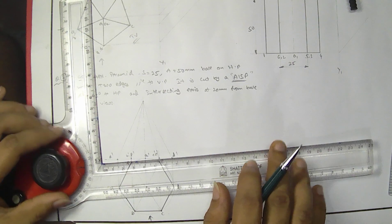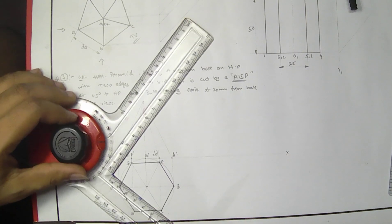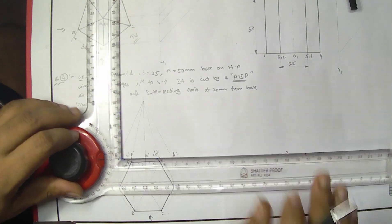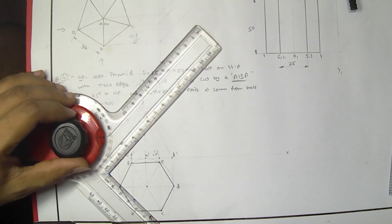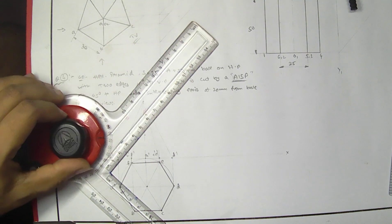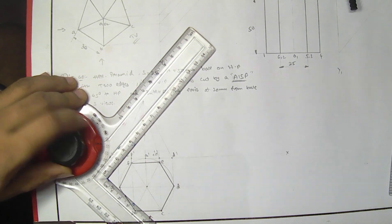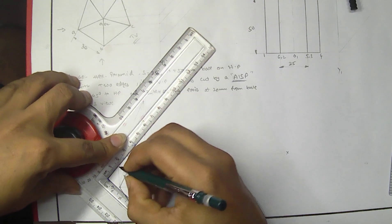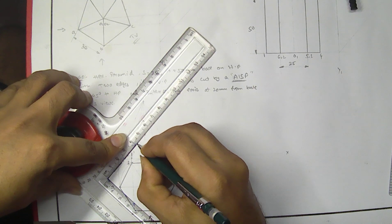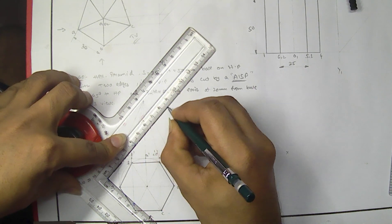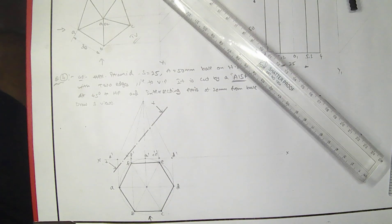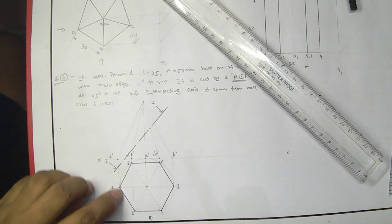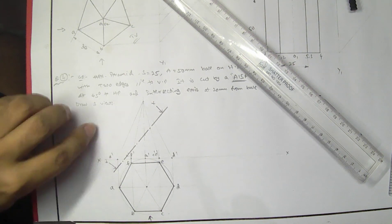Now the section plane is 45 degrees inclined to the HP and it intersects the axis at 20 mm above the base — 20 mm above the base and 45 degrees. So now I'm cutting this. This portion is removed, so from here also I have to make it light because I have removed this portion. Also A dash.